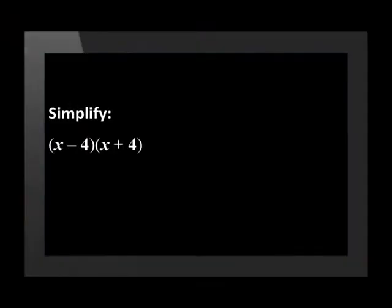Simplify in brackets x minus 4 and x plus 4. Notice that the brackets are the same except for the minus in the first and the plus in the second. That's how we can tell it's the result of a difference of two squares.